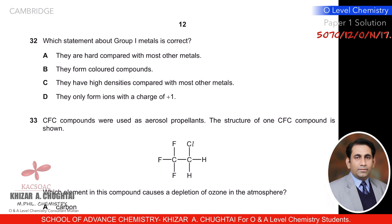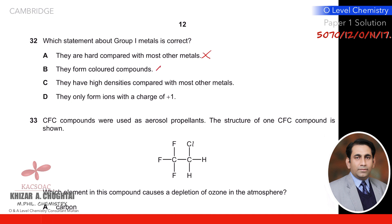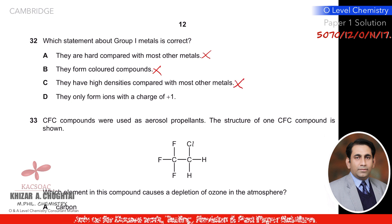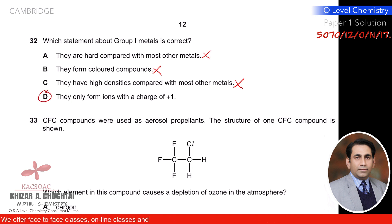Question thirty-two: which statement about group 1 metals is correct? They are hard compared to most metals — no, they are soft. They form coloured compounds — no. They have high densities — no, they have low densities. They form ions with only one positive charge — yes, this is correct. So D is the correct option.